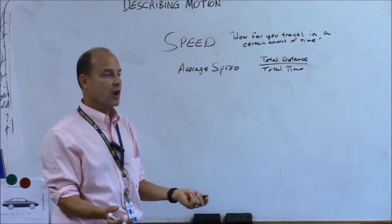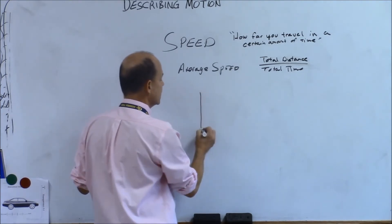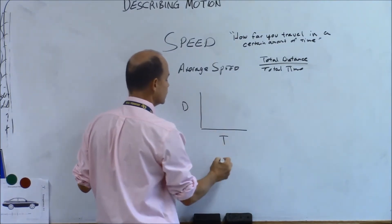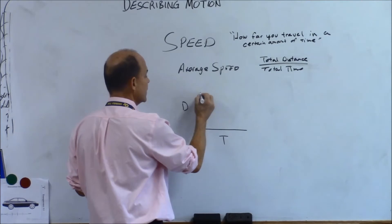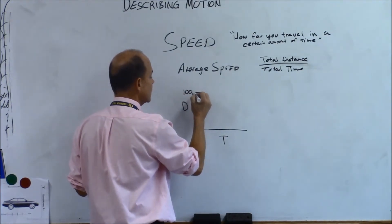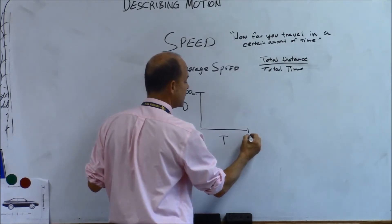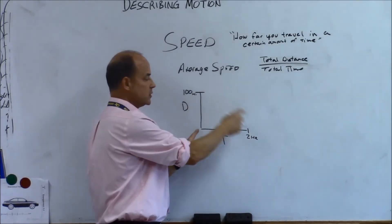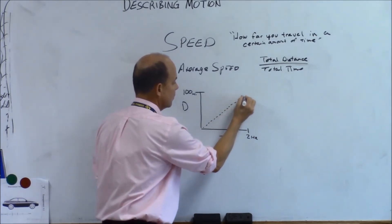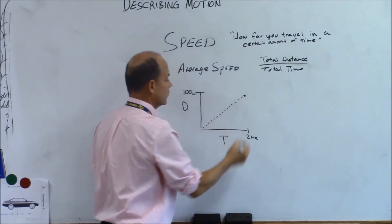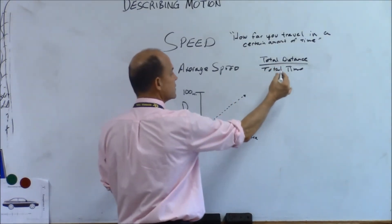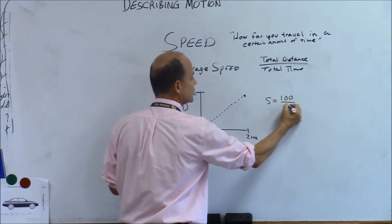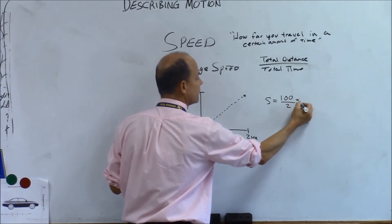We've been drawing position versus time graphs, or distance versus time graphs. Let's do our distance in miles. It was about 100 miles to Atlanta and we did it in about two hours. Our average speed — total distance divided by total time — is 100 divided by 2, which is about 50 miles per hour.